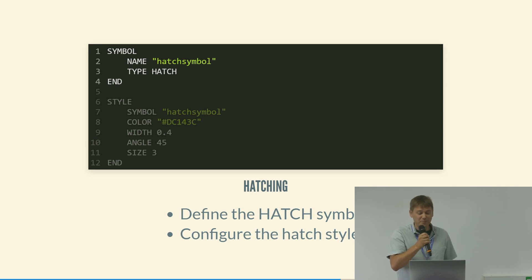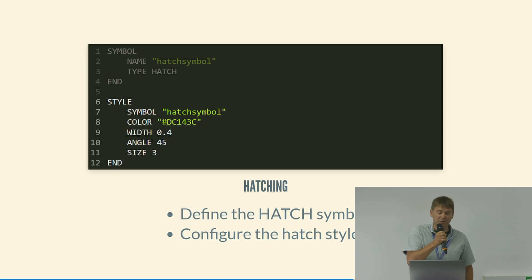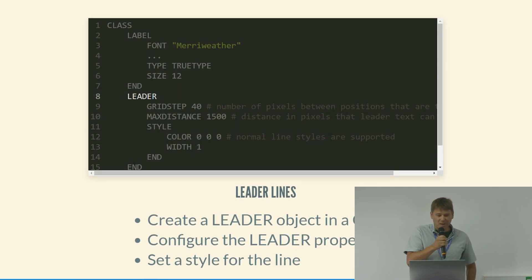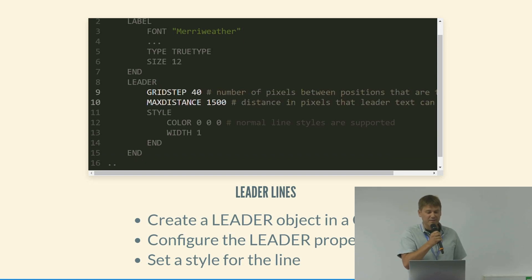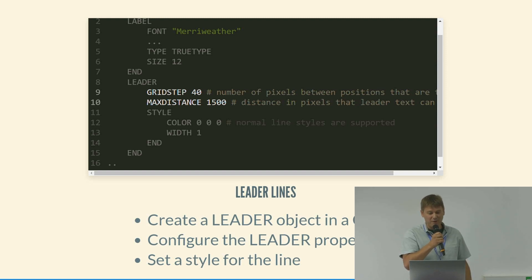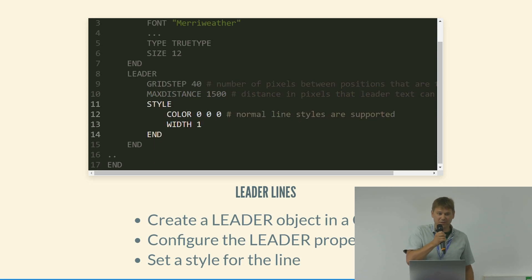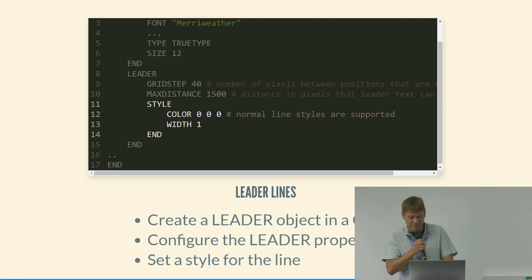For hatch symbols, you create a symbol in your MapFile and then in your layer you can have multiple styles — configuring the colors, the angle, and how many lines are used for the hatch. For leader lines there's a leader block you can add to a class. It tests where the next space is available for a label — testing every 40 pixels — and you can set the maximum distance so you don't go too far from your feature. You can also style the leader line itself, such as a simple black line, dashed lines, colored lines, or different thicknesses.